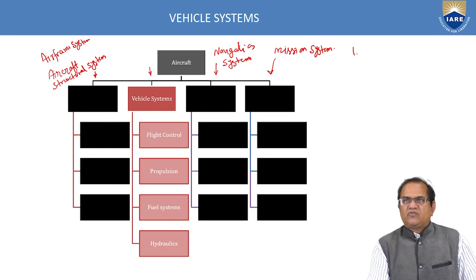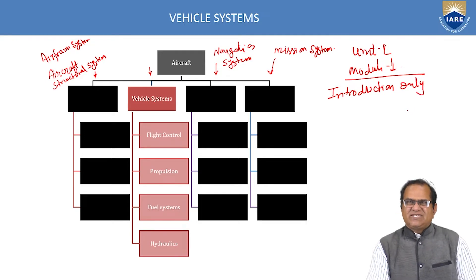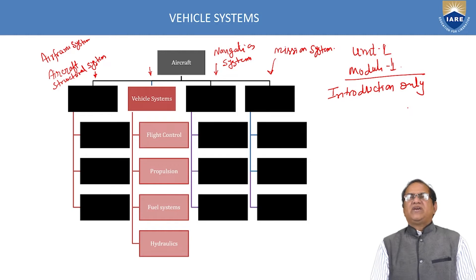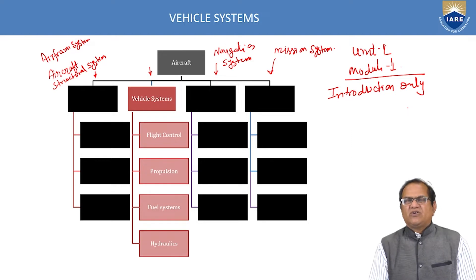As of now, we are in Unit 1 or Module 1, covering only an introduction to all parts and all verticals — not in detail on how they work. Before we start anything, we should understand what is inside. In this aircraft systems course, offered in the sixth semester, we can classify aircraft systems into four basic categories: airframe or aircraft structural system, vehicle system, navigation system, and mission system. Here I will give only an introduction, not detailed operation.